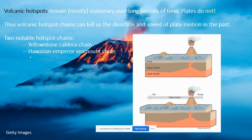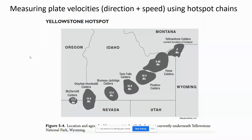Volcanic hotspots form from mantle plumes that remain mostly stationary over long periods of time — plates do not. The Yellowstone caldera chain is a good example. The current hotspot is located on the border of Wyoming, Idaho, and Montana, and this hotspot has remained stationary while the plate has moved over it.